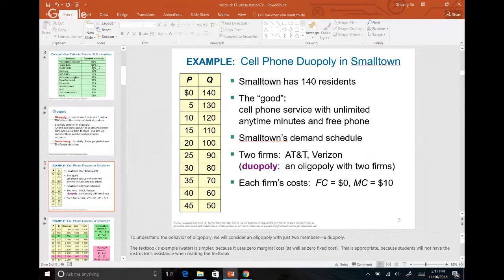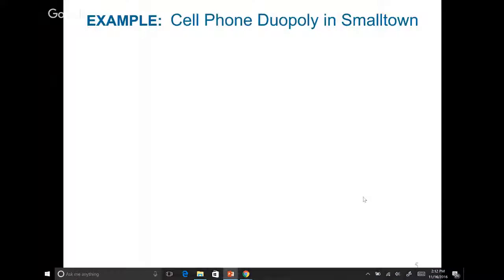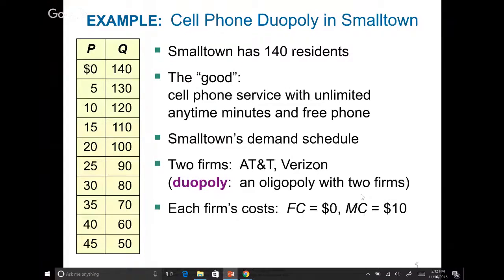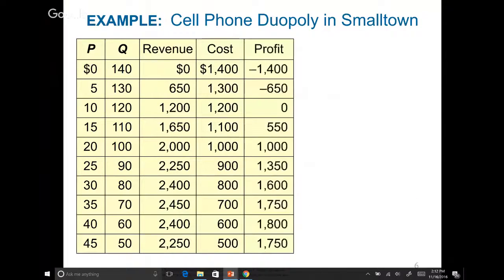Here's our example: a small town with 140 residents, and the service being offered is cell phone service. We have two companies — AT&T and Verizon — who are competitors. This market structure is called a duopoly. Duopoly is when you have a market with only two firms. We have our revenue, cost, and profit — revenue is price times quantity, marginal cost is $10, and profit is total revenue minus total cost.